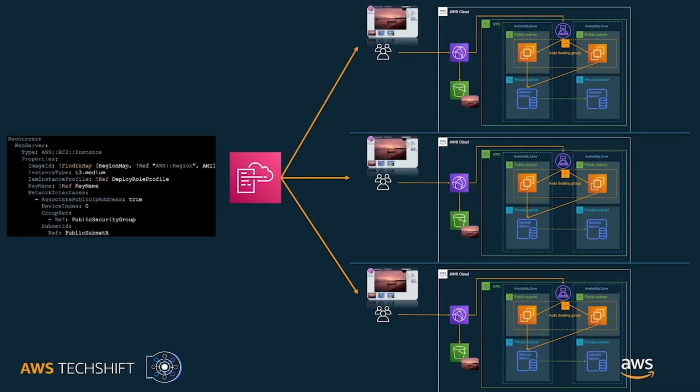It also serves as a form of documentation, meaning that the environment can quickly be reprovisioned in the event of a disaster recovery situation. It's best to version control your CloudFormation template in a Git repository. AWS CodeCommit is a managed source control service where you can host private Git repositories. This will ensure your template changes are version controlled and changes are tracked with appropriate approvals.